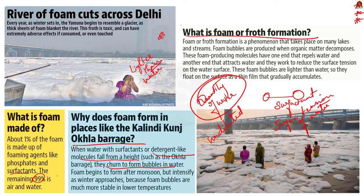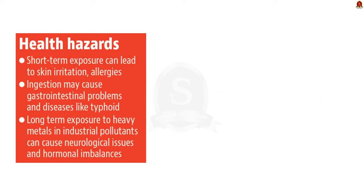Exposure to the toxic foam in the Yamuna River can have both short-term and long-term effects. Short-term effects include skin irritation, allergies, gastrointestinal problems, and diseases like thyroid disorders. Long-term effects include neurological issues, hormonal imbalances, skin diseases, and eye irritation. It is very important for the government to monitor the frothing and take adequate measures to tackle the issue.